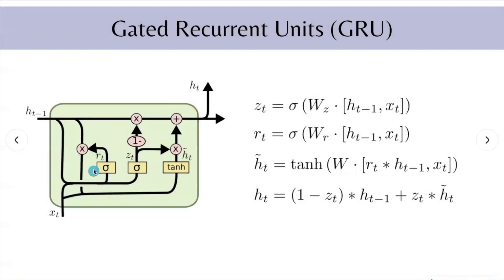The reset gate is similar to the forget gate — it controls what information to remove from the previous hidden state. It takes the current input and previous hidden state, multiplies by corresponding weights, adds them together, and applies sigmoid. The update gate controls how much of the new information is to be passed along. It takes the current input and previous hidden state, multiplies by corresponding weights, adds them together, and passes to sigmoid. The new memory cell ht-bar uses the reset gate to store only relevant information. The final memory step ht: the left-hand side operation decides what information from the previous step to pass along, and the right-hand side decides what information from the current state should be passed.